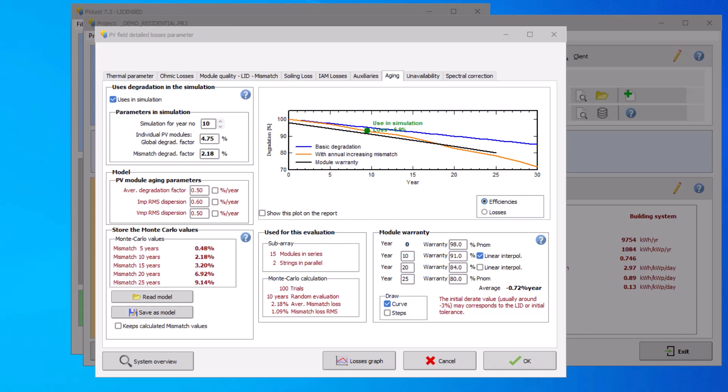If you want to store the aging parameters defined in the model, click on save as model. The next time, you can reuse the model by clicking on read model. The same parameters will be used in your next simulation.